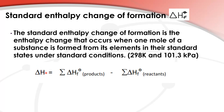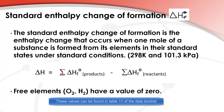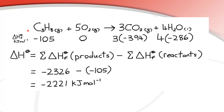We can use this equation: the enthalpy change is equal to the sum of the standard enthalpy change of formation of the products minus the sum of the standard enthalpy change of formation of the reactants. We can find the standard enthalpy change of formation values in the data booklet. Free elements such as oxygen or hydrogen have a value of zero, because they are just elements and are not forming from anything.